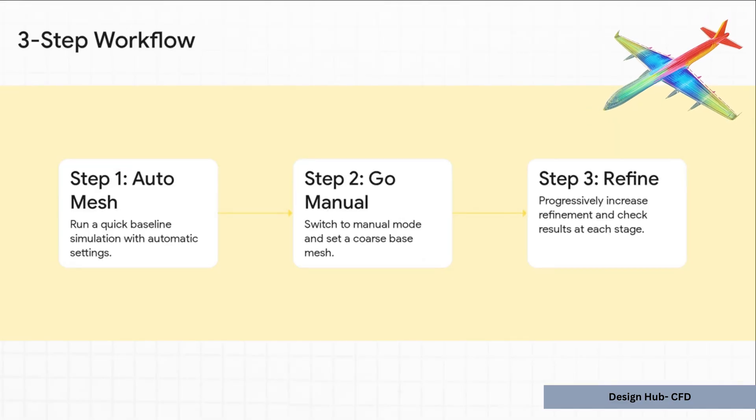This course-to-fine strategy is everything. You start simple, get a baseline result, and then you systematically add complexity where it's needed. This method saves a ton of time. It stops you from accidentally creating a billion-cell mesh on your first go, and it makes sure you only spend that precious computational power where it's actually going to improve your answer.